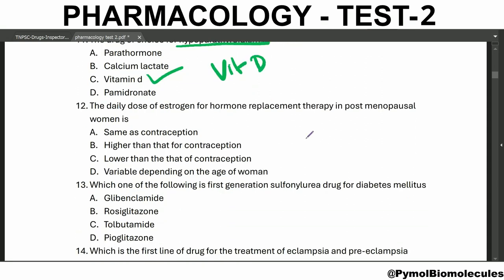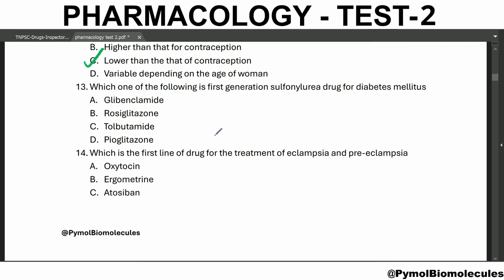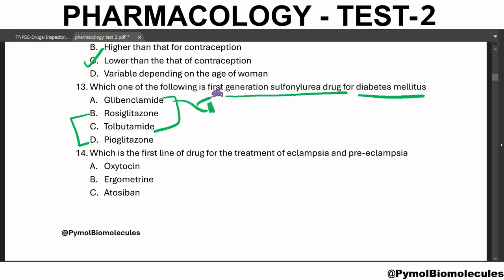The daily dose of estrogen for hormone replacement therapy in post-menopausal women is lower than that for contraception. Which one of the following is the first generation sulfonylurea drug for diabetes mellitus? Glibenclamide is the second generation sulfonylurea and tolbutamide is the first generation sulfonylurea. These sulfonylurea drugs act on sulfonylurea receptors present in the beta cells of the pancreas.